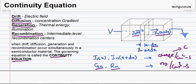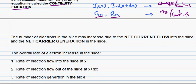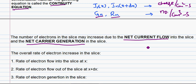Looking at the number of electrons in the slice, they may increase due to the net current flow into the slice and the net carrier generation. Net current flow is the difference between the input current flow and the output current flow of the slice. And the net carrier generation is the generation rate minus the recombination rate in the slice.